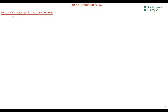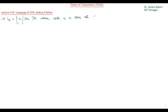Good day everyone, welcome to lecture number 33 of Theory of Computation. In this lecture we will continue the discussion of lecture 32. In lecture 32, we discussed the language LD, which is the language L equal to the set of X such that the Turing machine whose code is X does not accept X. We said that this language is not recursively enumerable.